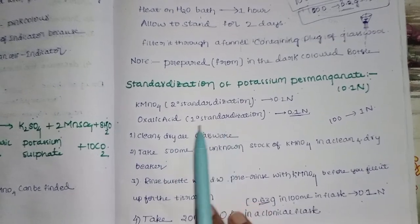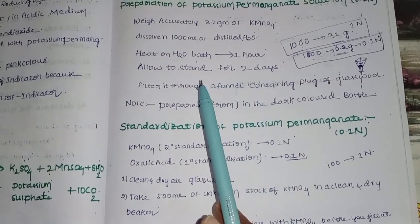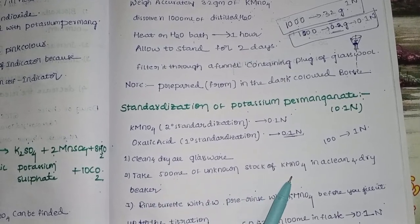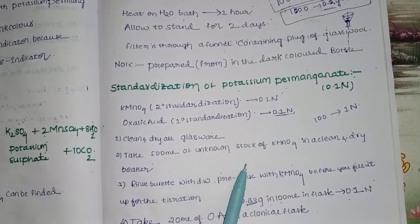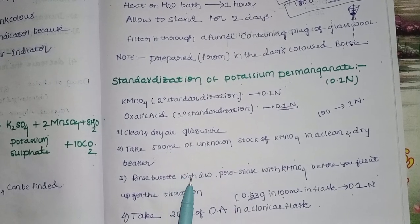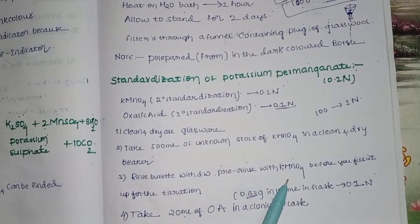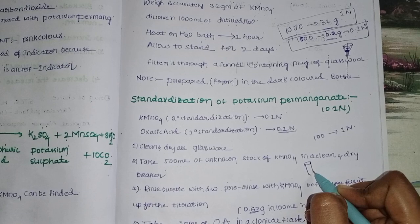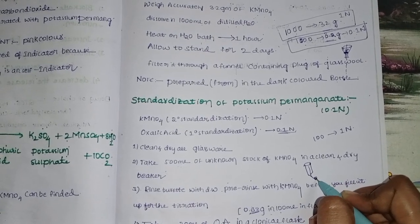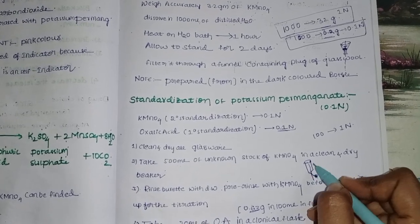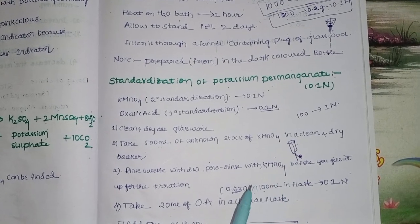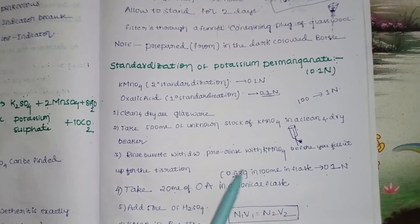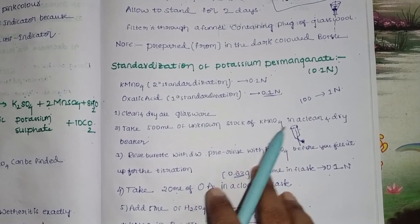Clean and dry all glassware. Take 500 ml of the unknown stock solution of KMnO4 in a clean and dry beaker. Rinse the burette first with distilled water, then rinse the burette with KMnO4 solution, and fill the burette with KMnO4.